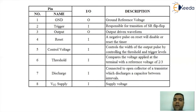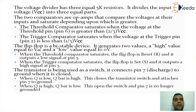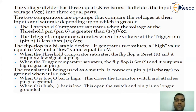Now we are trying to understand an elaborate discussion with respect to the internal structure. There are three 5K resistors that divide the voltage VCC equally. When talking about the upper comparator and the lower comparator — the upper comparator has a reference comparison with respect to 2/3 VCC and the lower comparator has a reference comparison with respect to 1/3 VCC.